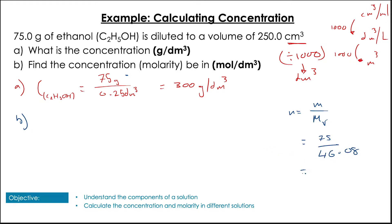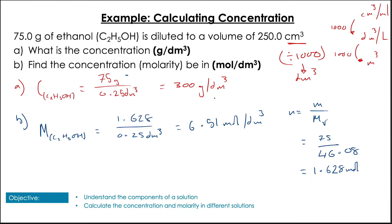Now, to find molarity, we use moles equals mass over Mr. Using the mass of 75 grams gives us 1.628 moles. Then plugging that into the molarity calculation — moles divided by volume 0.25 — gives an overall molarity of 6.51 mol/dm³. We could also have used the grams per decimetre value: 300 divided by 46.08 gives the same answer. Either method works, but it's good to be comfortable independently calculating molarity.